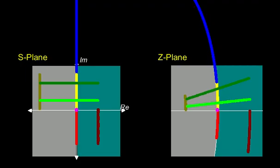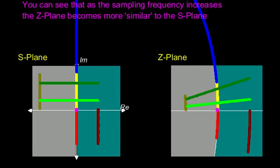I'm sure you can appreciate that these visualizations of the S and Z plane would be very similar if the sampling frequency was to continue to increase towards infinity.